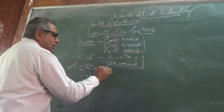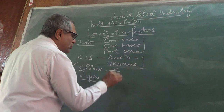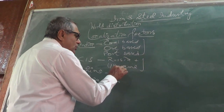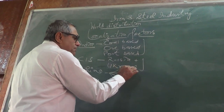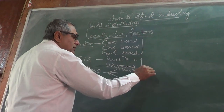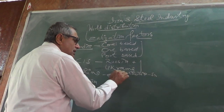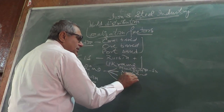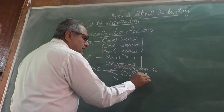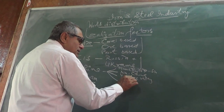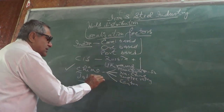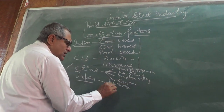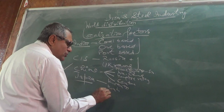China is the leading producer. There are four important steel manufacturing regions: Southern Manchuria, Northern China, the Yangtze Valley region, and the Canton region. For Japan, I gave you the Kanto region, Kinki, and the Kyushu region.